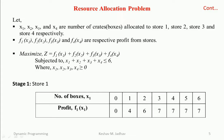Now let us see stage one. In stage one we consider store one. The number of boxes is x1 and the respective profit is f1(x1). These values are given in the problem — for different numbers of boxes, the respective profit values are shown.